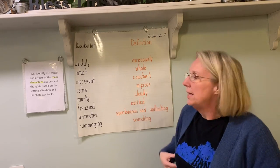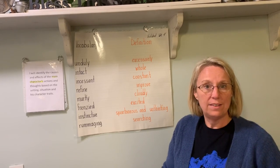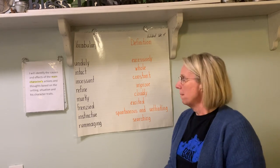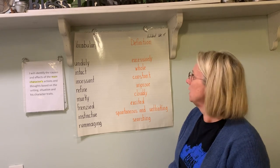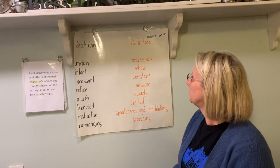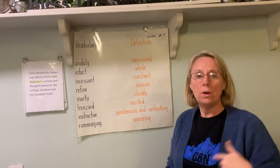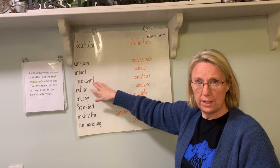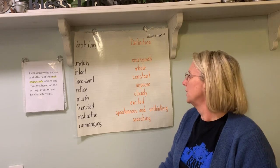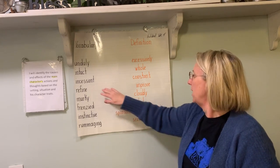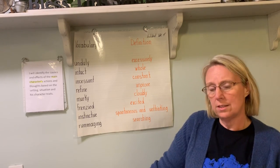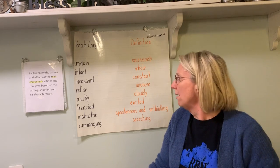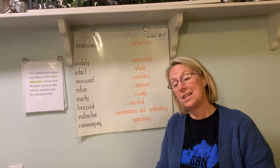Our vocabulary for the week: as we are reading, you would normally have tagged your vocabulary words or shown them to me. At this point, I want you to keep in mind what the words are and their meanings. 'Unduly' is excessively — we had that word in our reading yesterday. 'Intact' means it is whole. 'Incessant' is constant — that was also in our reading yesterday about the mosquitoes and the incessant buzzing. 'Refine' is to improve — he had to refine his shelter in last week's reading after the skunk got in and got the eggs.